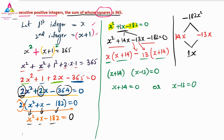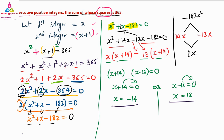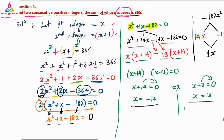So X equals minus 14 or X equals 13. Both are not correct — only one is correct, because the question says consecutive positive integers. Since X must be positive, X equals 13 is the correct answer. X equals minus 14 is rejected.